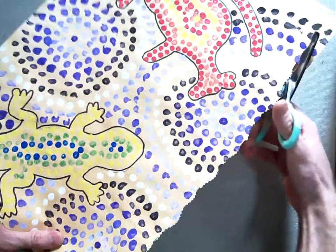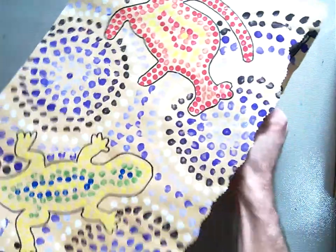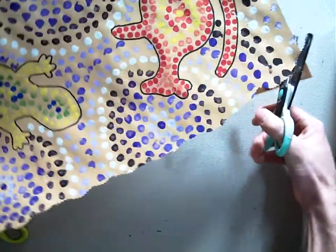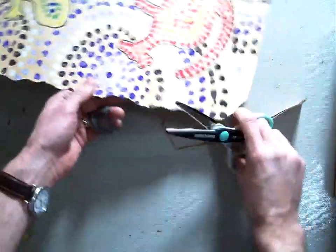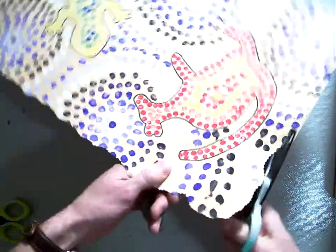That's what we were going for because we want this to look like a natural piece of branch or bark that we painted on, just like the aboriginals did with their paintings. So here's my rough edge.